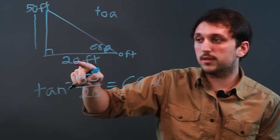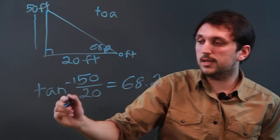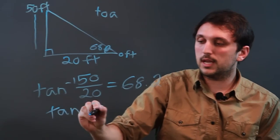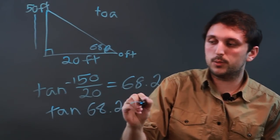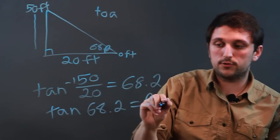Now, if we wanted to figure out these sides, we could say tan 68.2, and we would get 50 over 20 or 2.5.